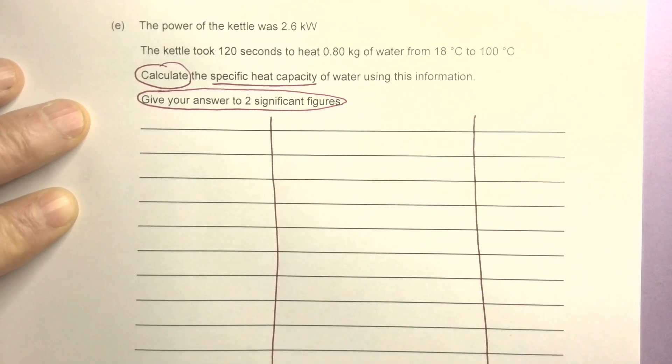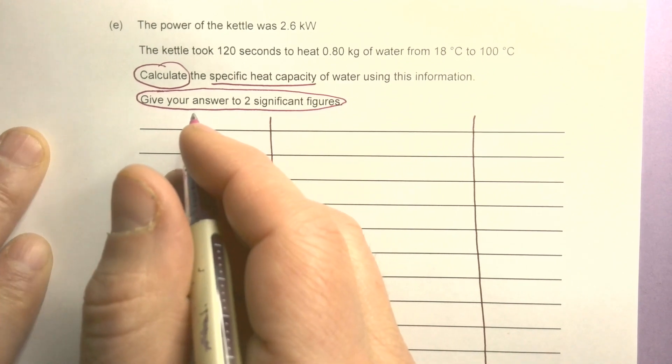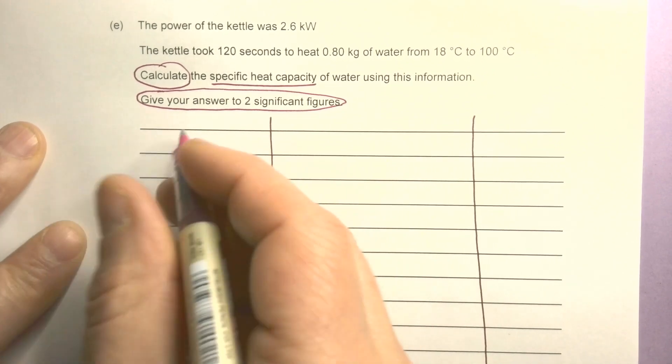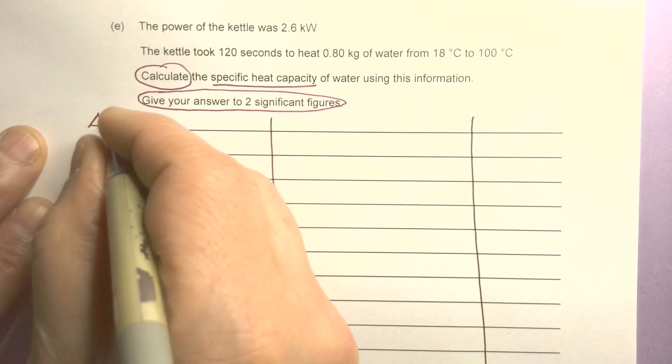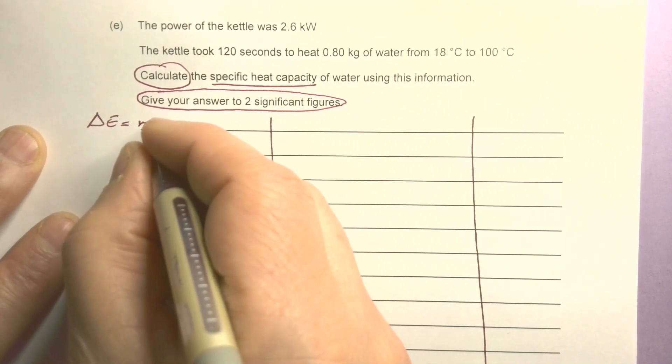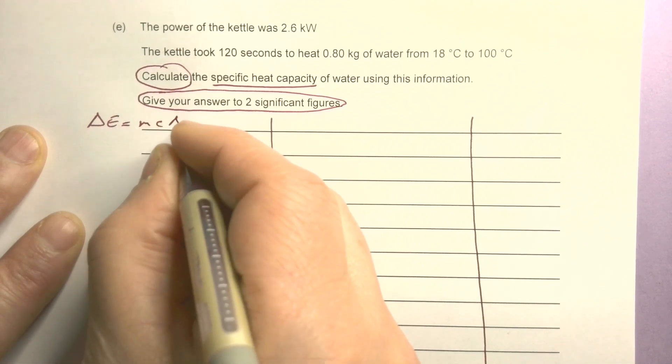Specific heat capacity - I know the equation for that and I can find it in my formula sheet. ΔE, so change in energy, equals m c Δθ (change in temperature).